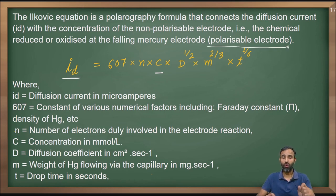C is given to us in millimole per liter, and that is required in millimole per liter. Second part is N. What is N? Number of electrons involved in the electrode reaction. That is also given as 2.